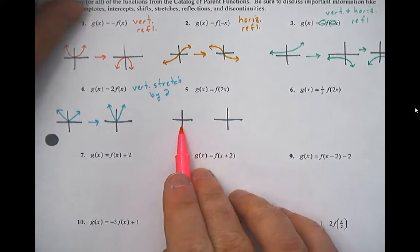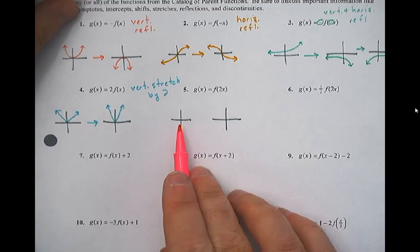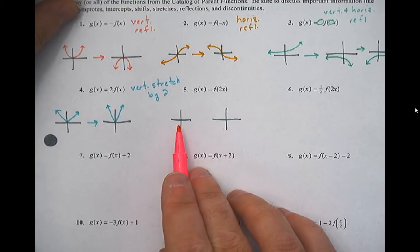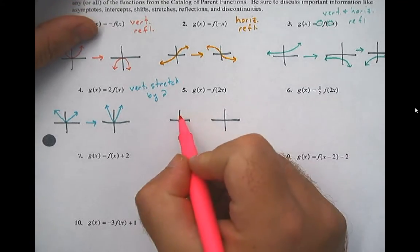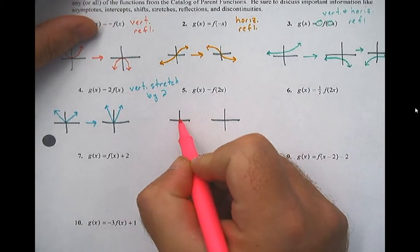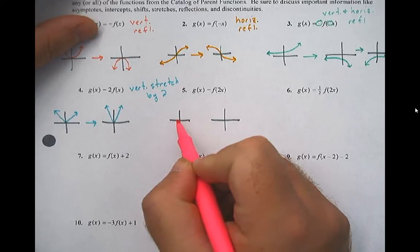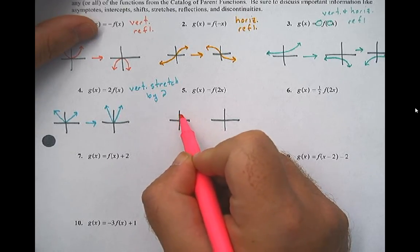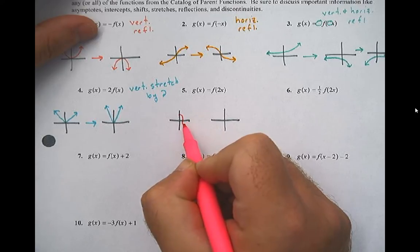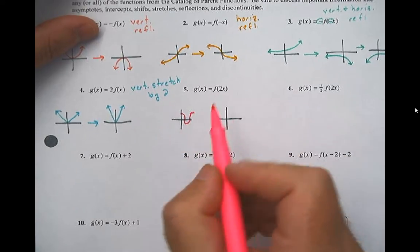I'd like you to sketch the cosine parent function. Pause and try it. Cosine — cosine of zero is one, so that's the one that starts up high. It's going to look something like this.